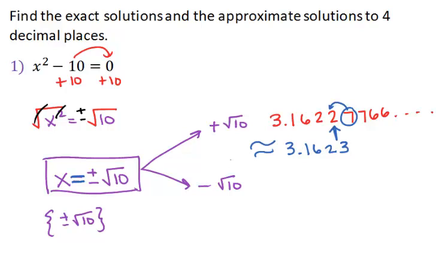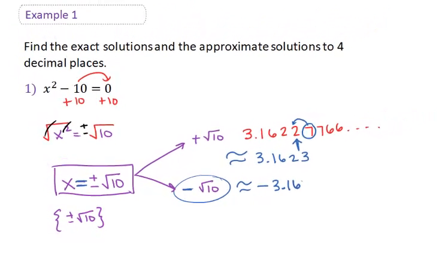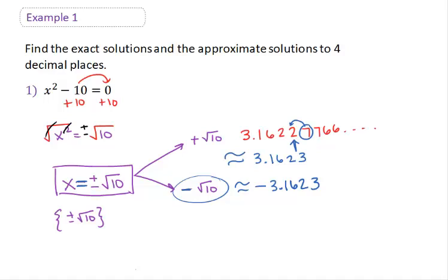Now, the notation we use: if the answer is exact, we use the regular equal sign. If the answer is approximate, we use a squiggly equal sign. For the other solution, negative root 10 — since it is the exact same number just with a negative sign — our approximation is exactly the same but negative: negative 3.1623. So those are our approximate answers: both positive and negative 3.1623, rounded to four decimal places.